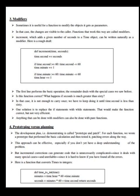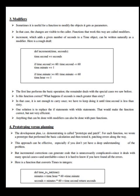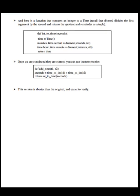Now let us see prototyping versus planning. The development plan demonstrated is called prototype and patch. For each function, we wrote a prototype that performed the basic calculation and then tested it, patching errors along the way. This approach can be effective especially if you don't yet have a deep understanding of the problem. But incremental corrections can generate code that is unnecessarily complicated and unreliable. Here is a function that converts times to integers, and here is a function that converts an integer to time. Recall that divmod divides the first argument by the second and returns the quotient and remainder as a tuple. Once we are convinced that they are correct, we can use them to rewrite add_time. This version is shorter than the original and easier to verify.